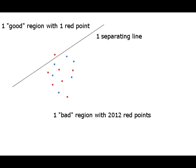One straight line separates 2012 points with color X, where X is red or blue, from one good region containing only points with color X.